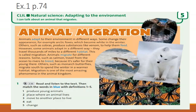Now let's read the text, then match the words in blue with the definitions from one to five. Мәтінді оқып, көппен берілген сөздерді бірден-бес аралығында берілген сөздердің мағынасымен сәйкестендіріңіз.